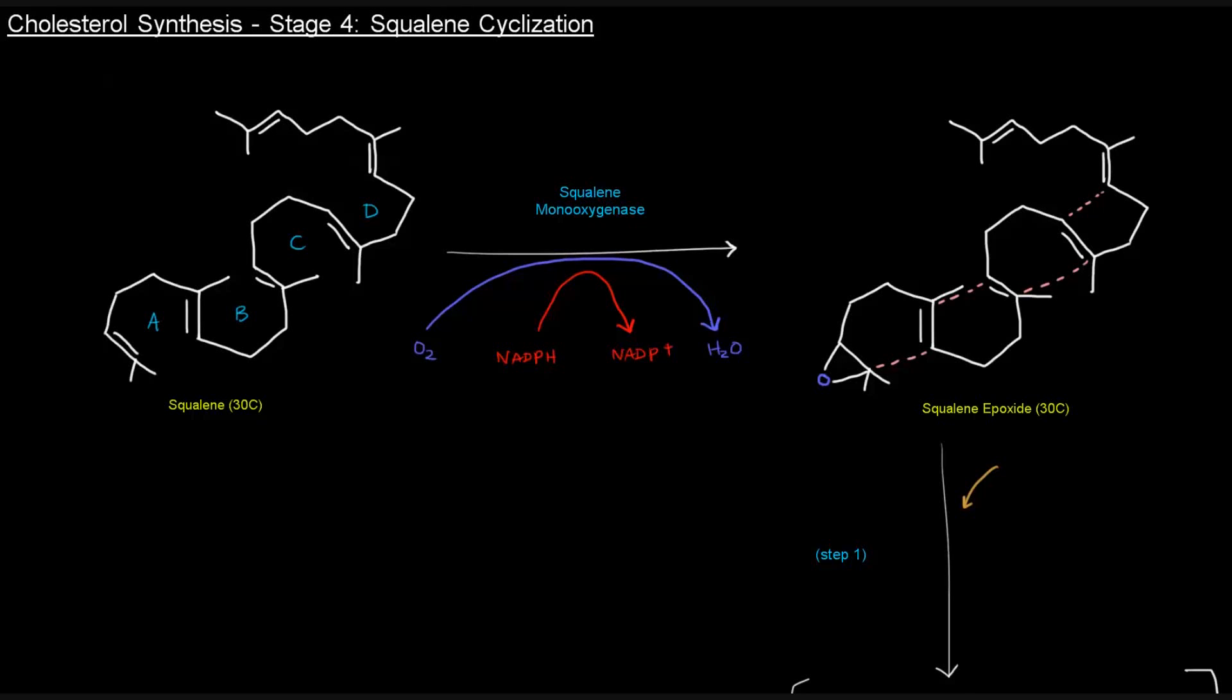Once we have this squalene epoxide here, what's going to happen is that we're basically going to form these rings where these light pink dotted lines are. And the electrons are going to come from here. So these electrons will come here, these electrons will go there, these electrons will go here, and these electrons will go there. And these electrons will come off to go onto this oxygen, and they're eventually going to pick up a proton in the next step.